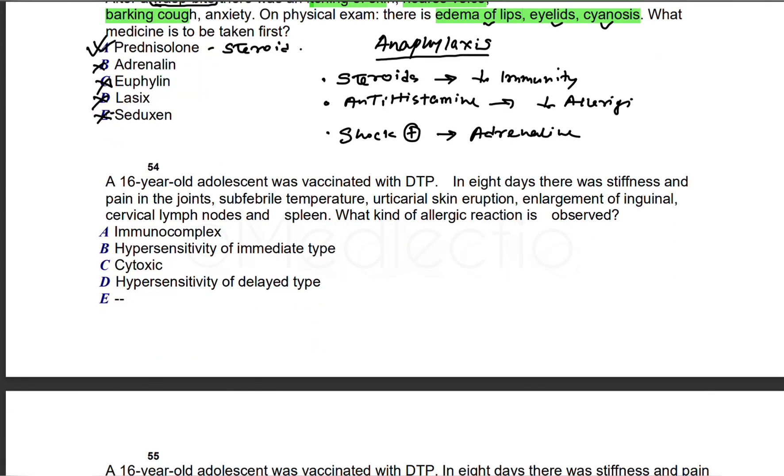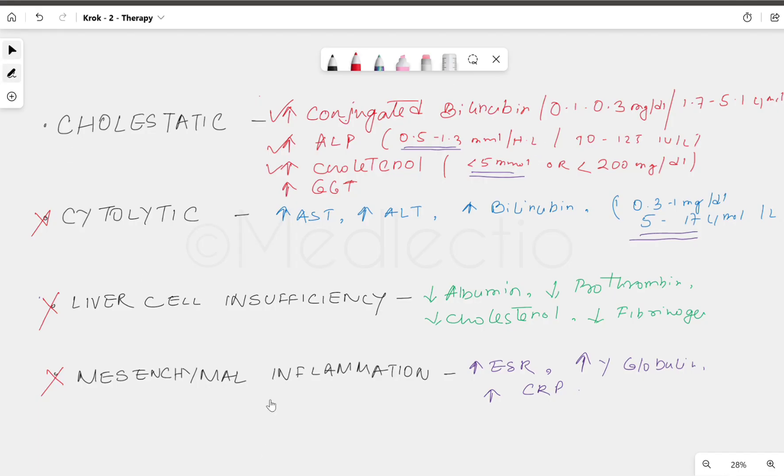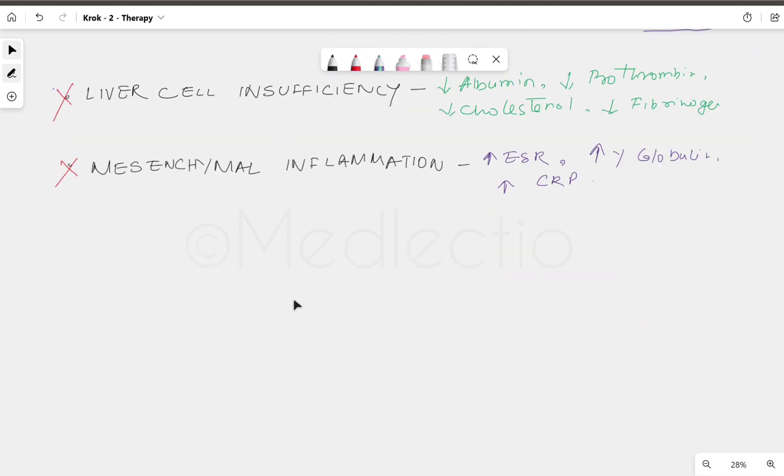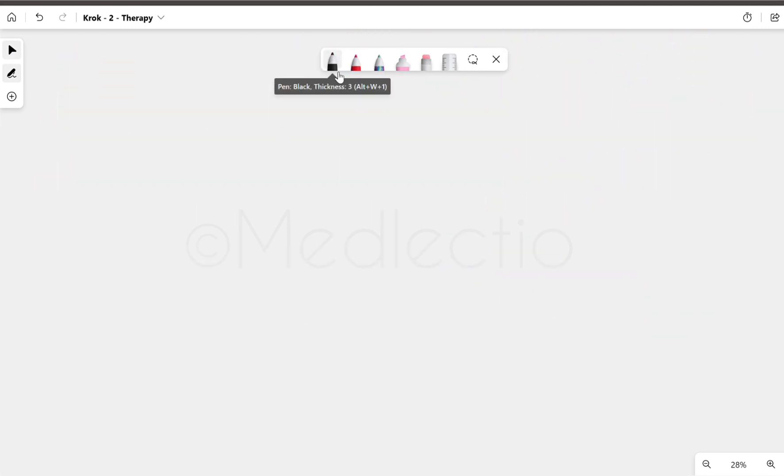Next question: a 16-year-old adolescent was vaccinated with DTP. In eight days there was stiffness and pain in joints, subfebrile temperature, erythematous eruption, enlargement of inguinal cervical nodes and spleen. What kind of allergic reaction? We need to know about hypersensitivity reactions.